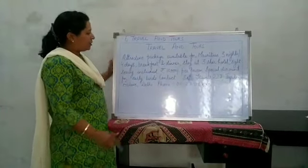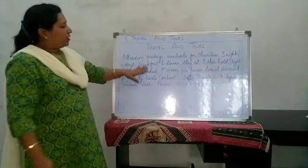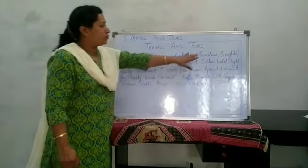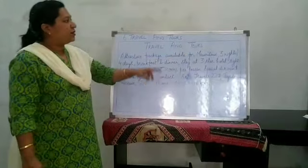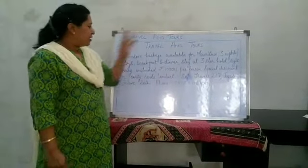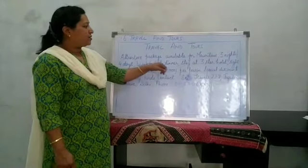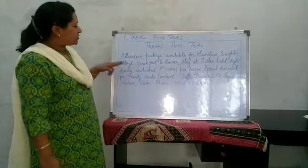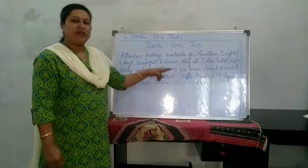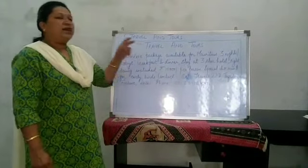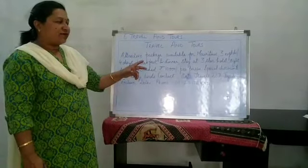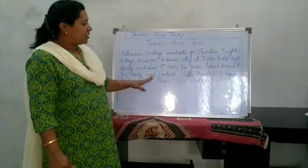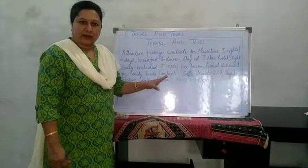In this example, a travel company is offering a package for Mauritius. The destination is Mauritius, the duration is 3 nights and 4 days, food and lodging includes breakfast and dinner, stay at a 3-star hotel, and sightseeing is included along with the estimated cost. If any discount is offered by the travel agent, that is also mentioned — special discount for early birds — and then the contact details are given.